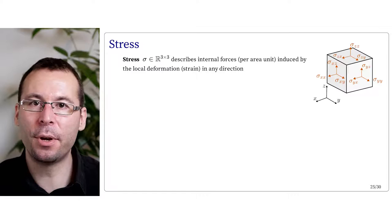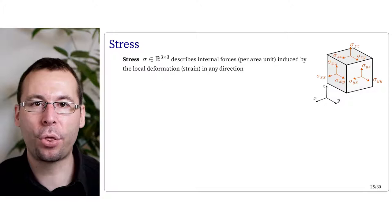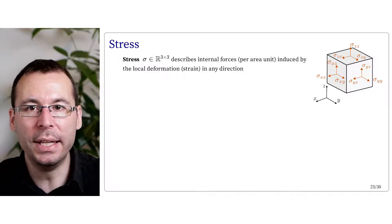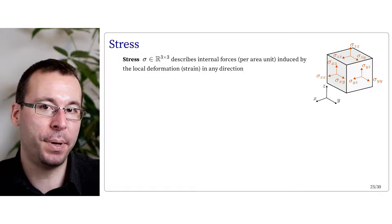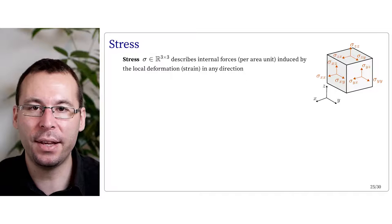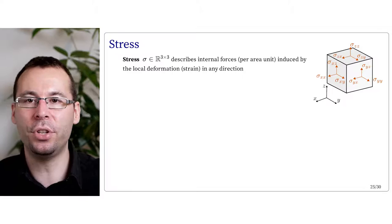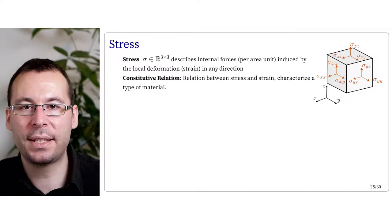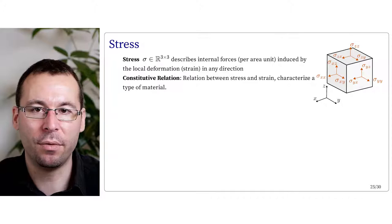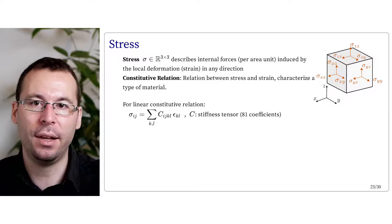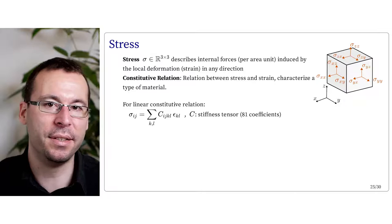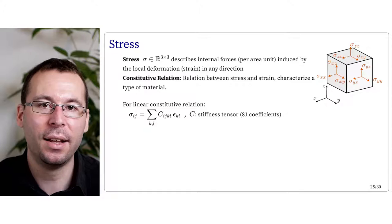The second element is the stress sigma — a 3×3 matrix or tensor — which describes the internal forces per area unit induced by the local deformation in any direction. This can be seen as a generalization of pressure along different directions. Sigma_ij is the ith component of this force acting with respect to the jth component of the direction. The relation between the stress and the strain is an internal characteristic of the material called the constitutive relation. One of the simplest constitutive relations is to suppose a linear relation between stress and strain: sigma_ij equals the sum over k and l of some constant c_ijkl times epsilon_kl. This constant c is called the stiffness tensor, and in its general form c has 81 coefficients.